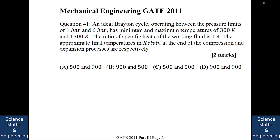An ideal Brayton cycle operating between the pressure limits of 1 bar and 6 bar has minimum and maximum temperatures of 300 Kelvin and 1500 Kelvin. The ratio of specific heats of the working fluid is 1.4. We need to find the final temperatures at the end of the compression process (T2) and at the end of the expansion process (T4).